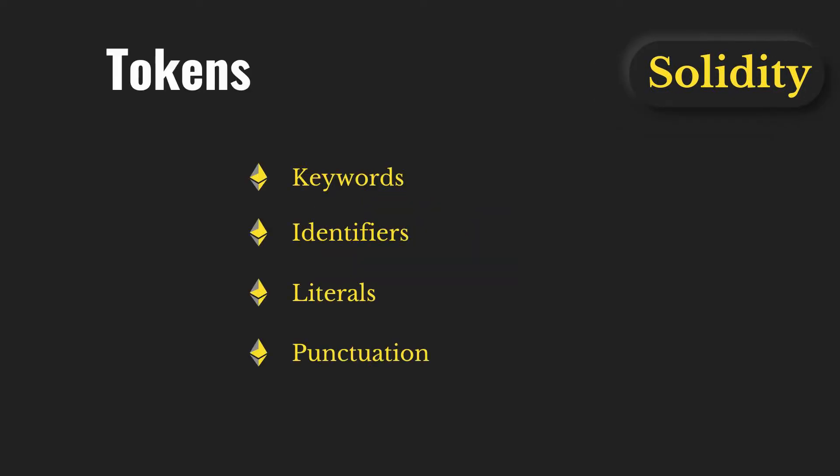Let's talk about some important components of Solidity. First, keywords — in Solidity there are special reserved keywords that cannot be used as variable names, such as contract, library, interface, pragma, and modifier. The second component is identifiers — you can define any variable or function in your smart contract with a name, and that name becomes the unique identifier for that particular function or variable.